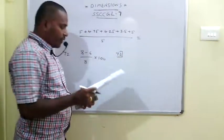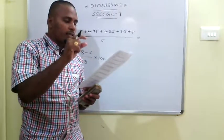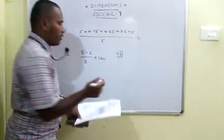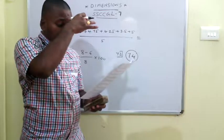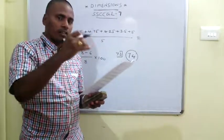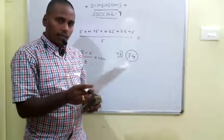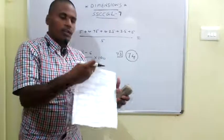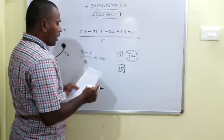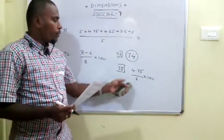The 73rd problem: The difference between Rabi and Kharif production was minimum in 2015-16. The 74th: Average Rabi production is 6.6 million tons; the 2013-14 production was 8, so the difference is 1.4 — the answer is none of these. The 75th: In 2012-13, Kharif production was 4.75 compared to Rabi 6; percentage = 4.75/6 × 100, approximately 79%.